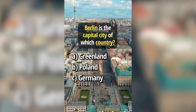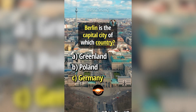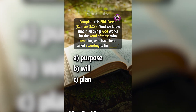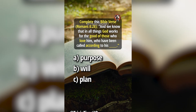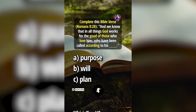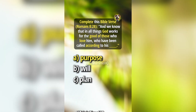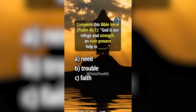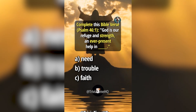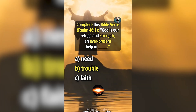Berlin is the capital city of which country? Answer C, Germany. Complete this Bible verse, Romans 8:28: 'And we know that in all things, God works for the good of those who love him, who have been called according to his blank.' Answer A, purpose. Complete this Bible verse, Psalm 46:1: 'God is our refuge and strength, and ever-present help in blank.' Answer B, trouble.